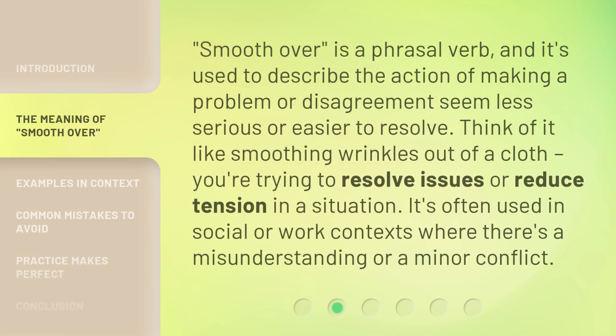Smooth over is a phrasal verb, and it's used to describe the action of making a problem or disagreement seem less serious or easier to resolve. Think of it like smoothing wrinkles out of a cloth. You're trying to resolve issues or reduce tension in a situation. It's often used in social or work contexts where there's a misunderstanding or a minor conflict.